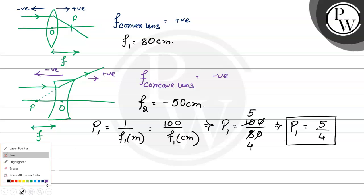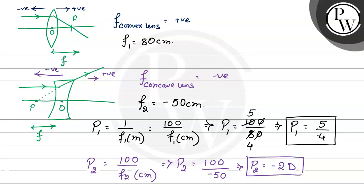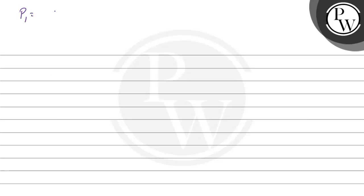And we find P2: P2 will be equal to 100 by F2 in cm, so P2 is equal to 100 by minus 50, which implies P2 is equal to minus 2 diopter। और P1 हमें मिला था 5 by 4 diopter। अगर 5 by 4 को decimal में convert करें तो P1 is equal to 1.25 diopter, and P2 is minus 2 diopter.